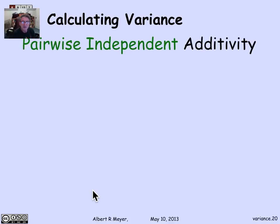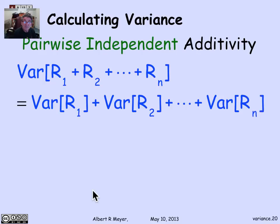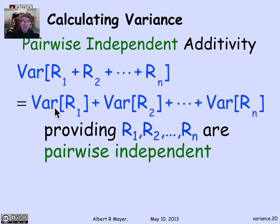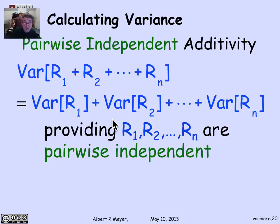Another important rule: variance is additive — the variance of a sum is the sum of the variances. But unlike expectation, variance is additive only when the variables being added are pairwise independent. This is because variance involves squaring, so when you expand the algebra you get quadratic terms E[ri · rj], which factor into E[ri]·E[rj] only under pairwise independence. The proof is in the text and is again straightforward.